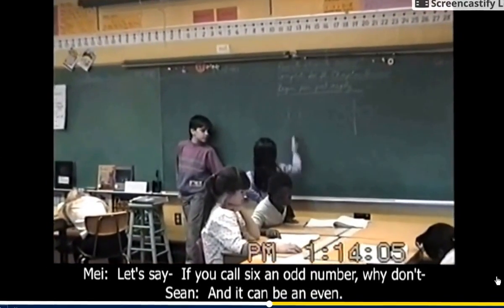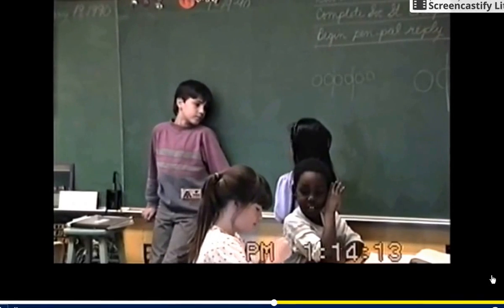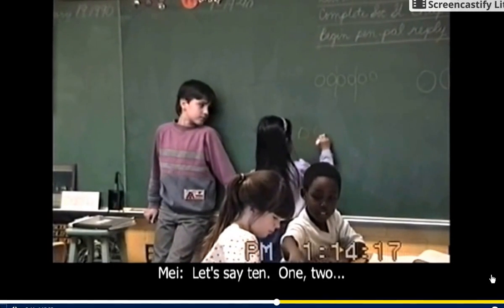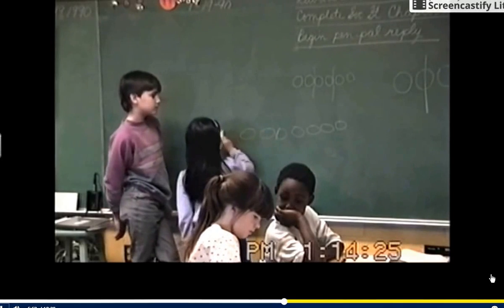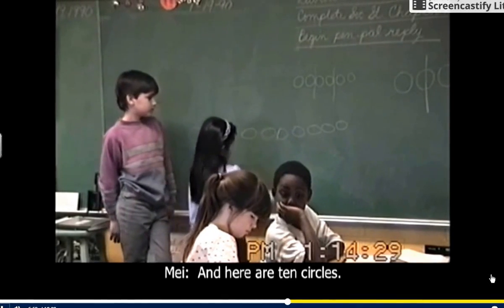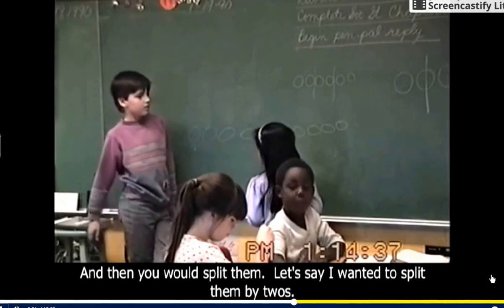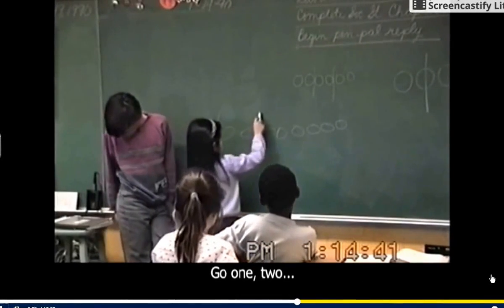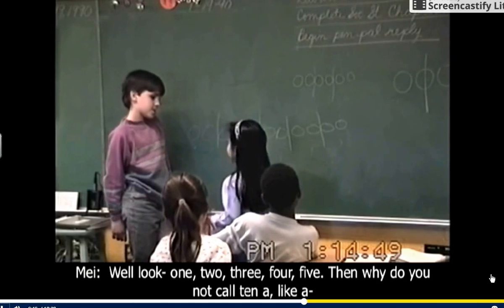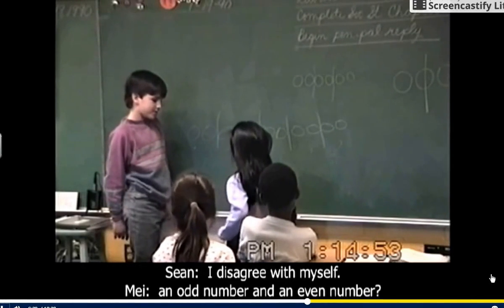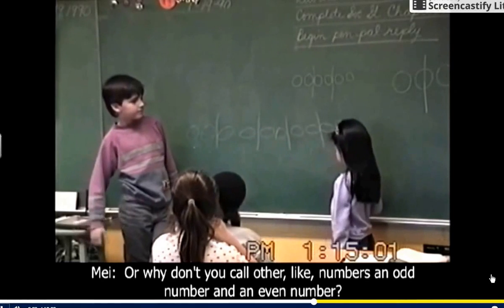If you call six an odd number, why don't so many people agree with that? Let's say ten — one and two. Then you would split them, let's say I wanted to split them by twos: one, two, three, four, five. Then why do you not call ten an odd number and an even number? Why don't you call other numbers odd numbers and even numbers too?